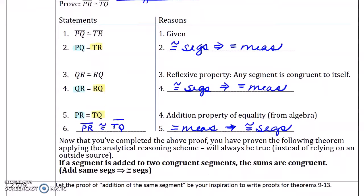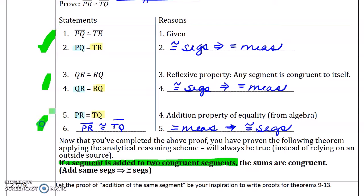Now that we've completed this proof, we won't need to go through all of this in our homework. We now have a theorem that reads: if a segment is added to congruent segments — in other words, if QR is added to these congruent segments — then the sums are congruent.